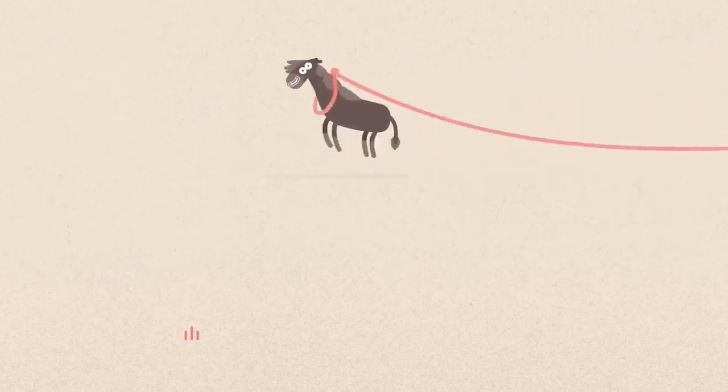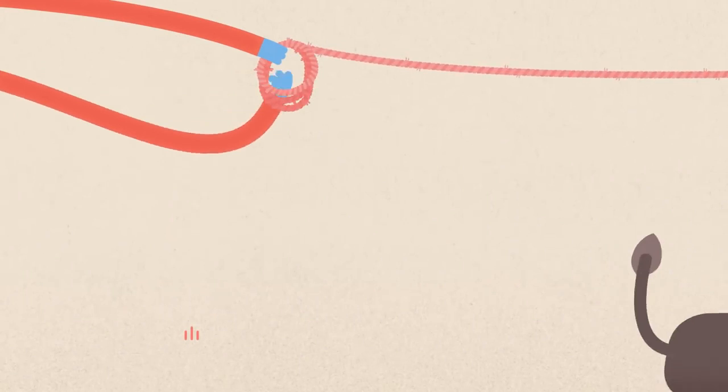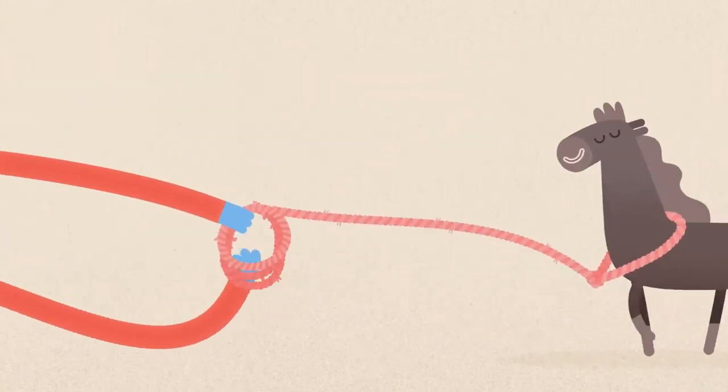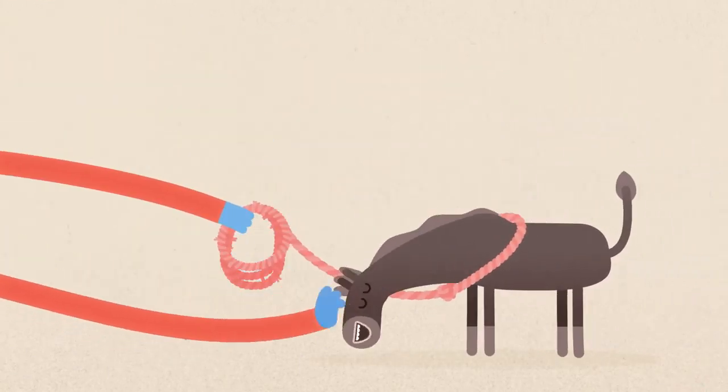The horse runs around, feeling like it's got all the space in the world. But very slowly, the rope's brought in, and the horse adjusts to this feeling until it comes to a natural place of rest.